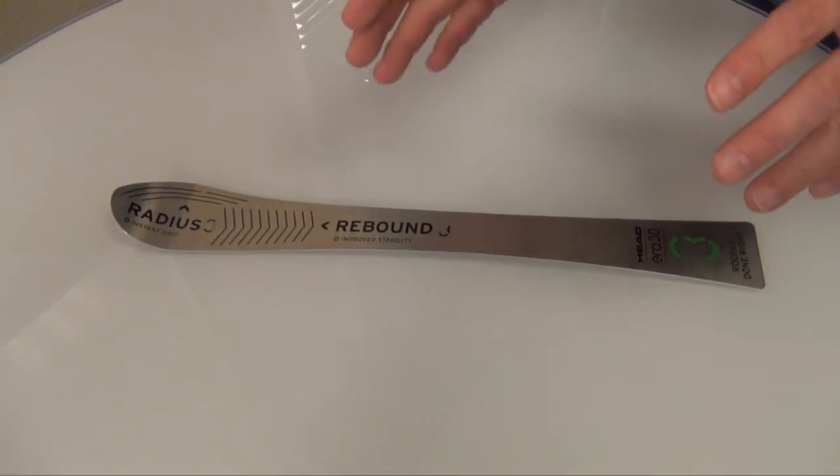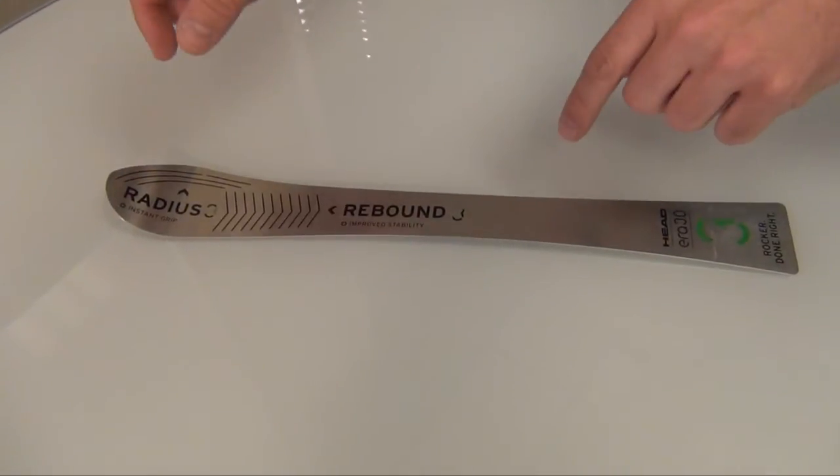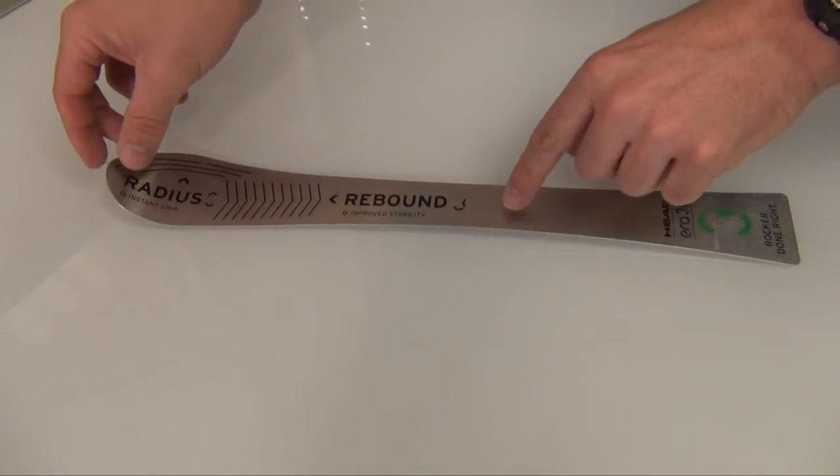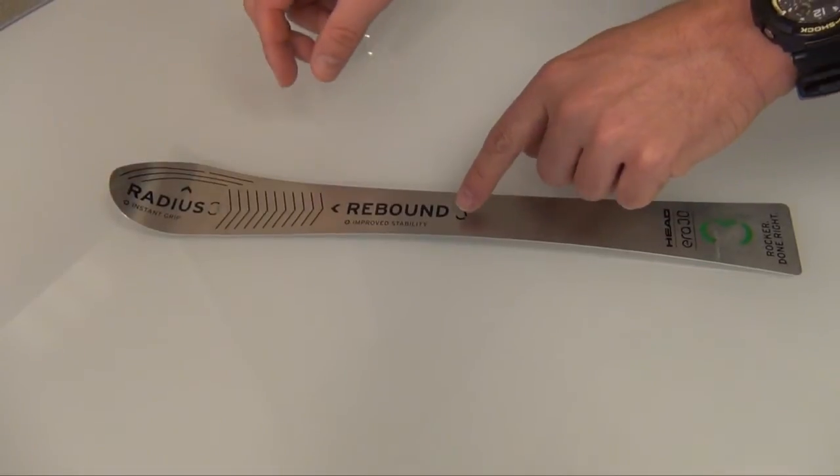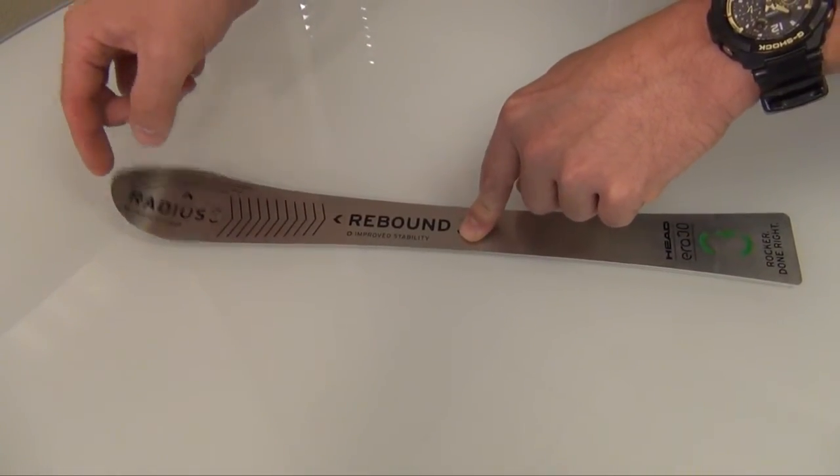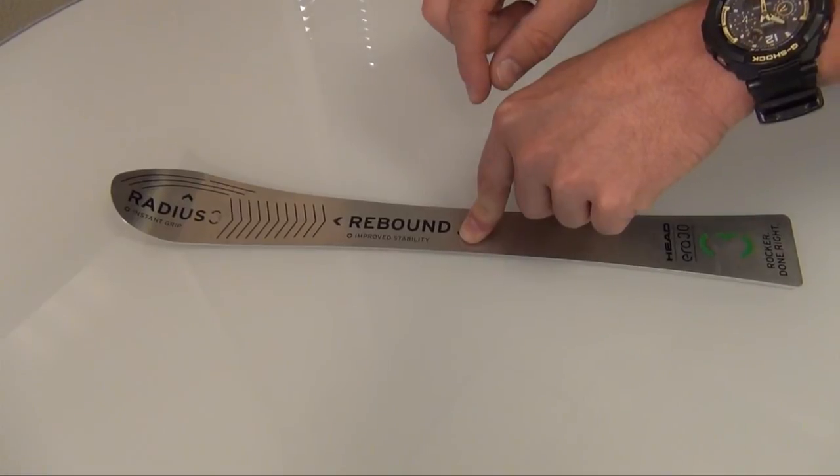Let's use a ski cutout to show you the relationship between progressive radius and all-ride rocker technology. In most skis, we have rocker, which is great for ease of initiation.